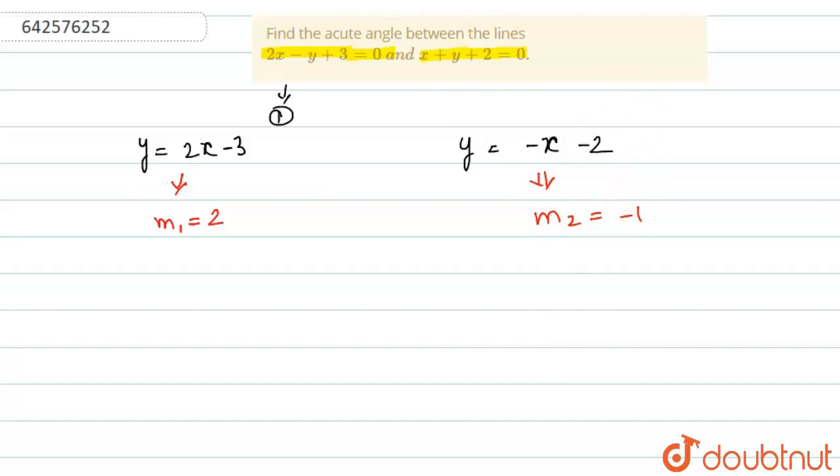Now, for the angle between the lines, the formula is given as tan theta is equal to mod of m2 minus m1 upon 1 plus m1 m2.